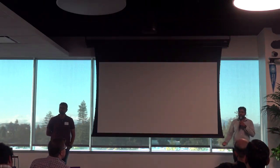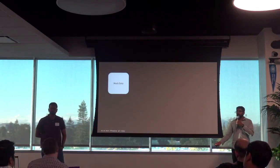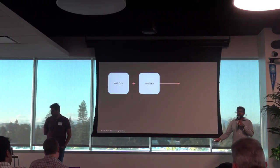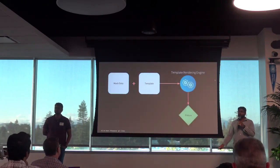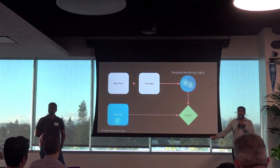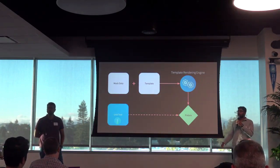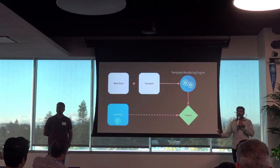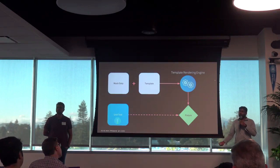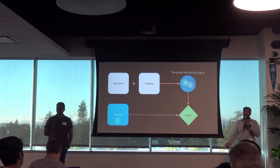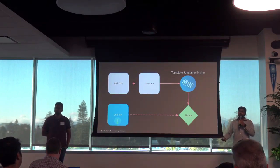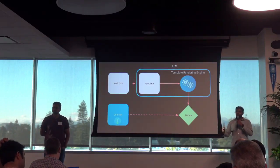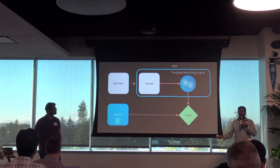How does unit testing normally work? You have mock data, and for JavaScript you need access to the DOM so you have a template. You pass both to a template rendering engine and out comes a fixture. Your unit test uses that fixture to verify changes in your code. This works great for many stacks — React, Ember, and others. But the problem on AEM is that the template and template rendering engine are encapsulated within AEM, making it difficult to render fixtures offline without a live running AEM instance.